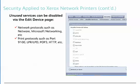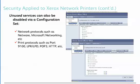Using Centerware Web, we can disable unused protocols by two different methods. The first is via the edit device page. Network protocols such as Netware and Microsoft networking, in addition to print protocols such as port 9100 or LPR/LPD, and device discovery protocols such as SLP or UPnP are included as well. Unused services can also be disabled via a configuration set under the security tab.